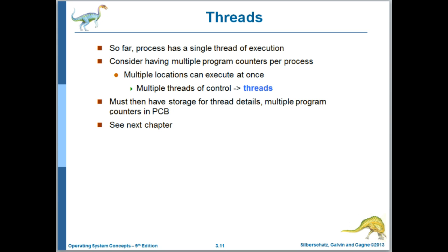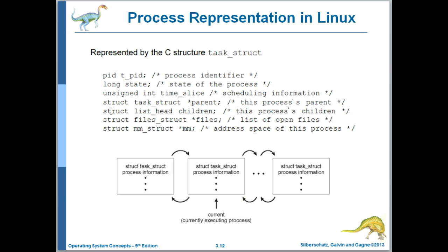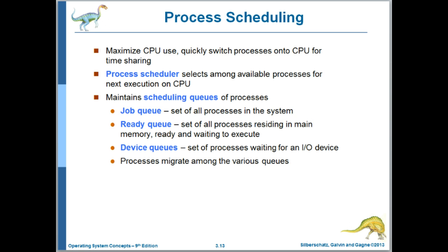We'll skip discussing threads for now — we'll get into them in the next chapter. In Linux, a PCB variable is called a task_struct. This is an extremely simple representation of the task_struct. The actual task_struct declaration for the Linux kernel we're working with in this class is 278 lines long, so there's a lot of information tracked for a process. The process scheduler, also known as the CPU scheduler, is responsible for maintaining these lists of PCBs.